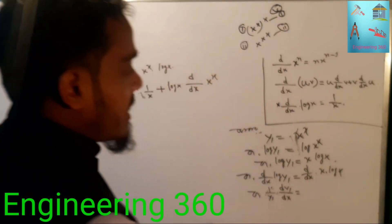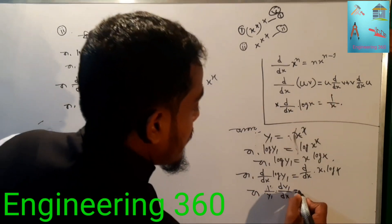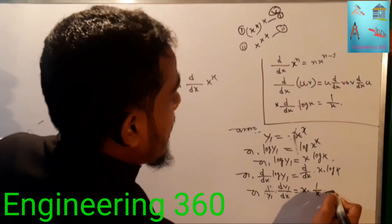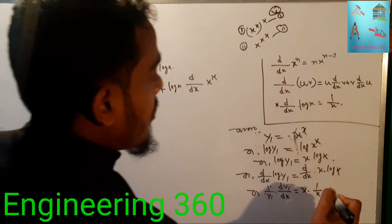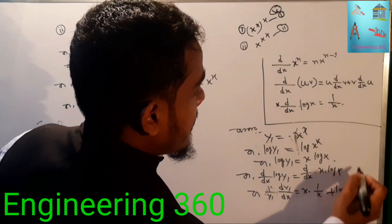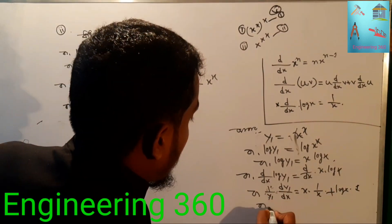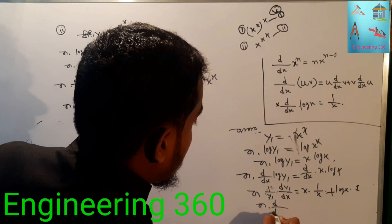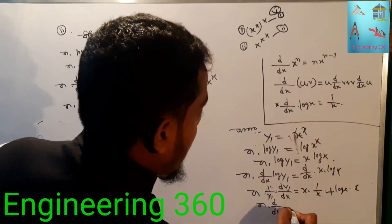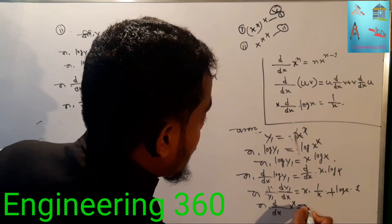Applying the product rule on x log x: it equals x times 1 by x plus log x times 1. So d/dx(x log x) equals 1 plus log x. Therefore 1 by y1 times dy1/dx equals 1 plus log x, giving d/dx(x to the power x) equals x to the power x times (1 plus log x).